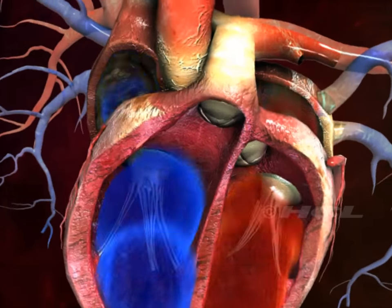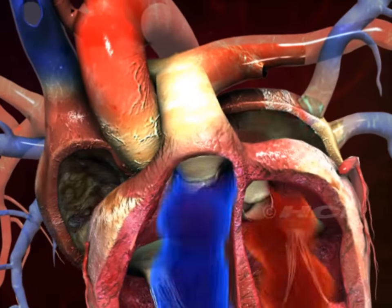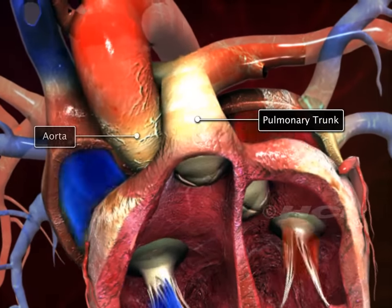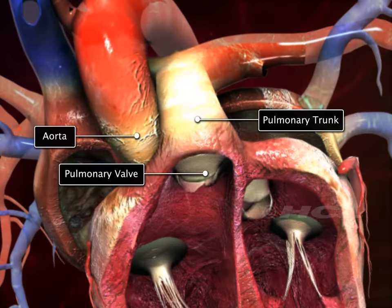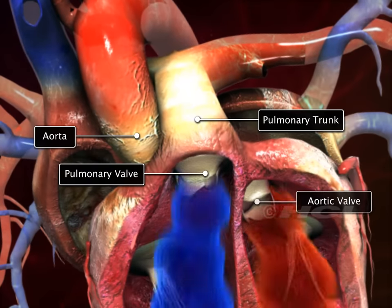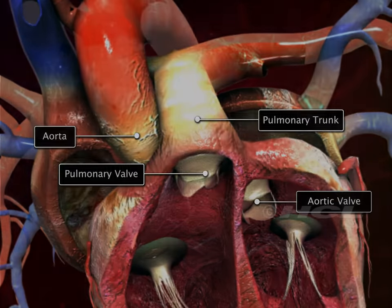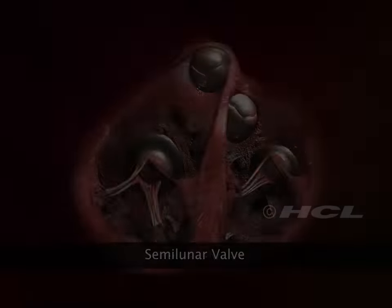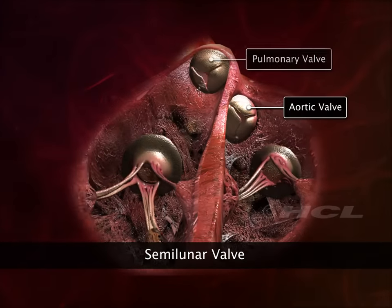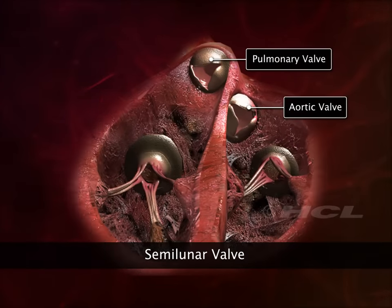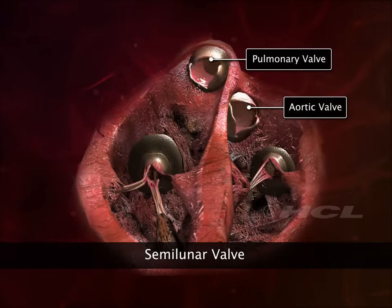There are also valves at the opening of the pulmonary trunk and the aorta. These are called the pulmonary valve and the aortic valve respectively. Because of their crescent moon shape, these two valves are also called semilunar valves.